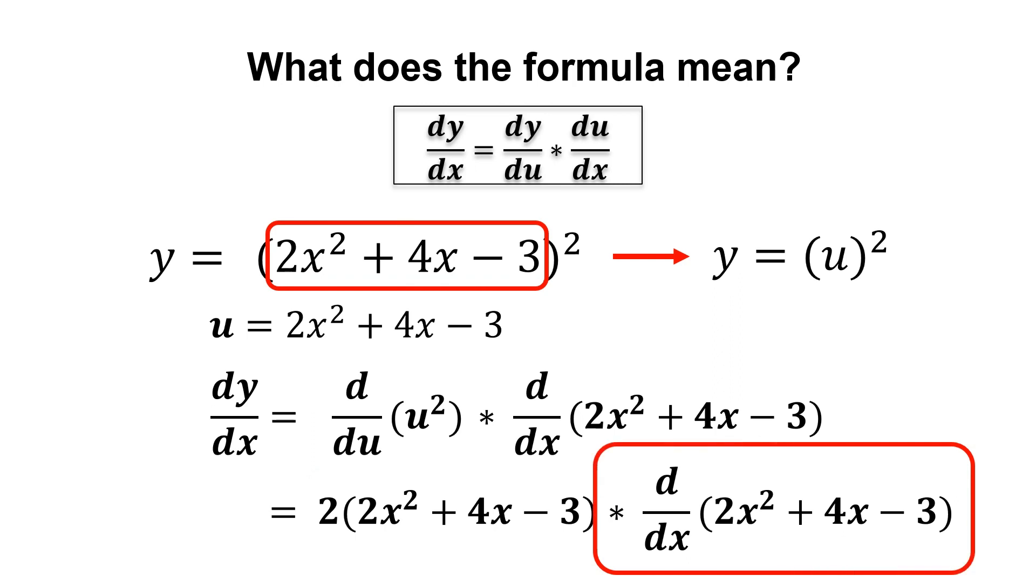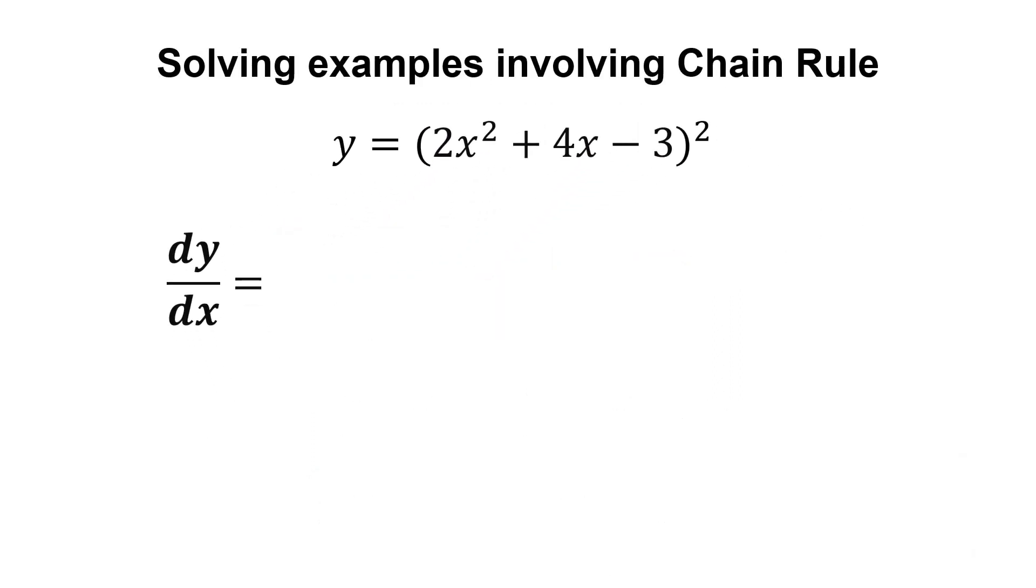Then, we multiply it with the derivative of the inner function. Don't worry, let us solve for this example now. First, we differentiate the whole thing while keeping the inner function unchanged. By using the power rule, we bring the exponent down, and we subtract the power by 1.